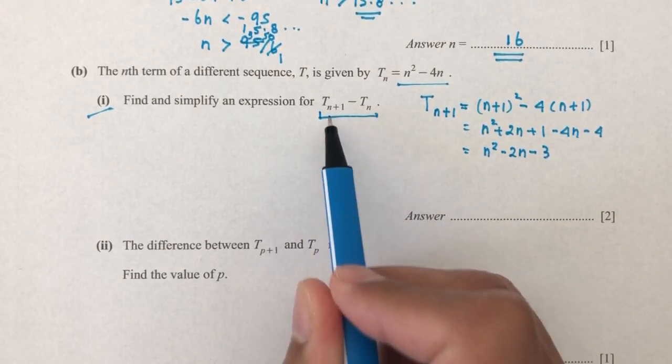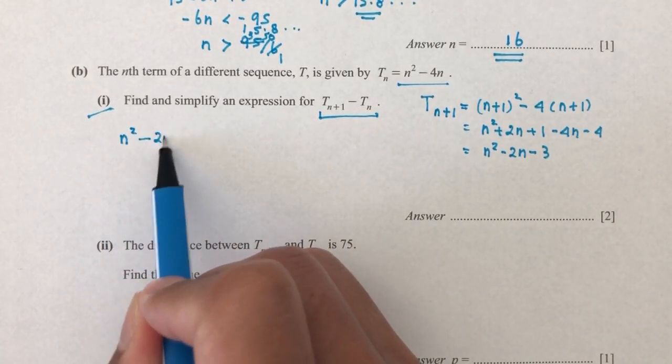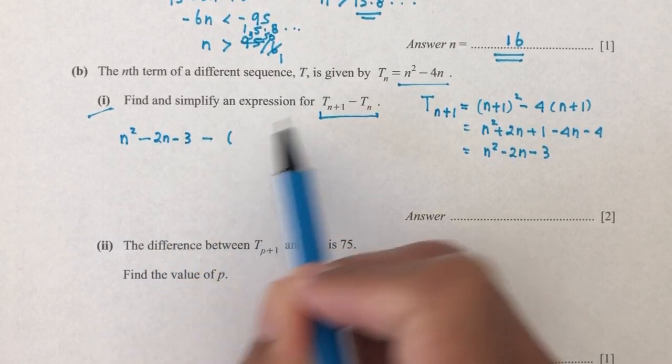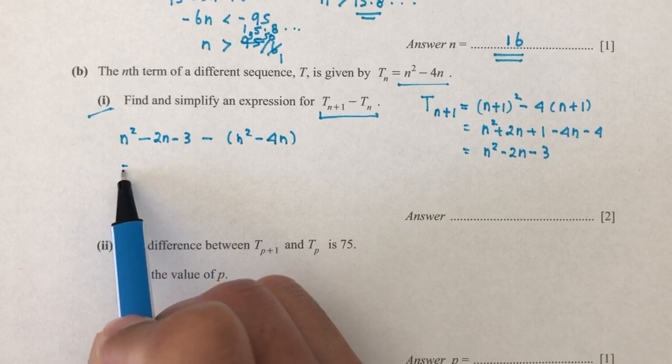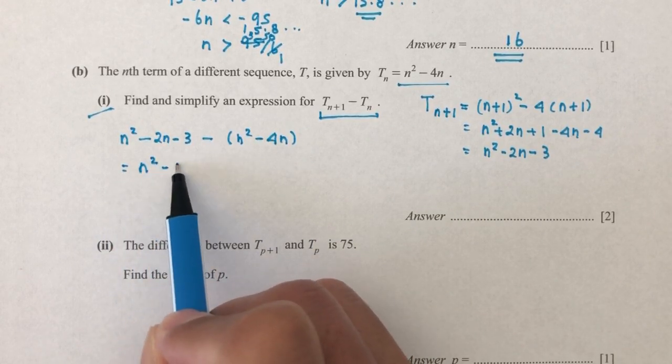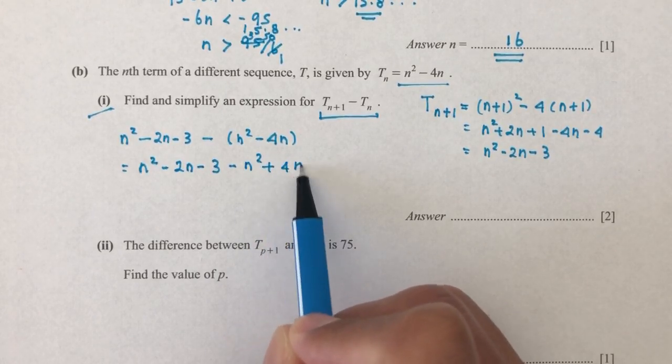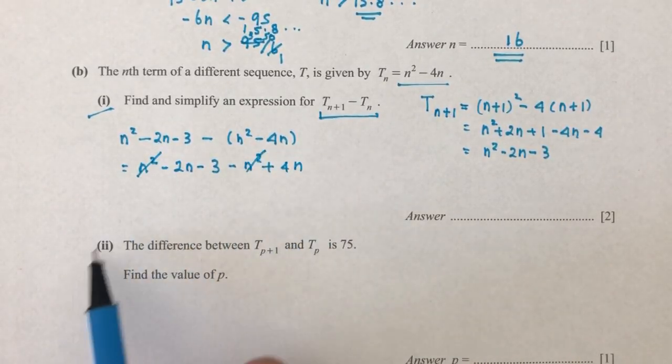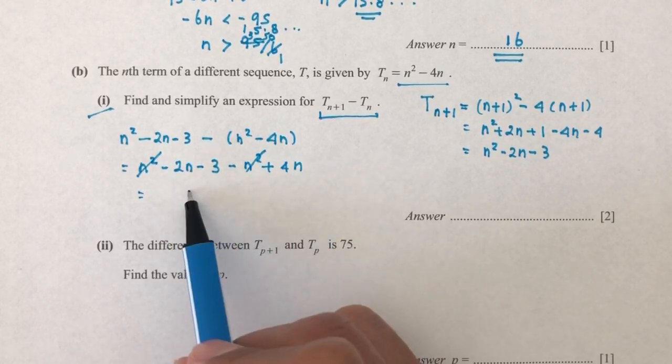Now we have to find T_{n+1} - T_n. That will be n² - 2n - 3 minus T_n, which is n² - 4n. Simplify: n² - 2n - 3 - n² + 4n. These two cancel out, so you'll have -2n + 4n, which is 2n - 3. That will be your answer for that expression.